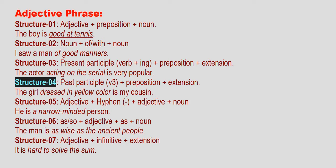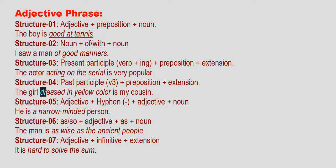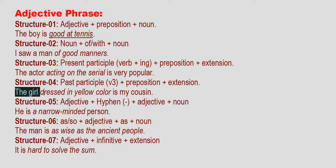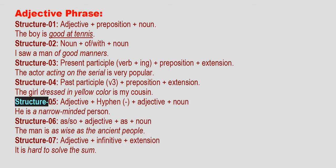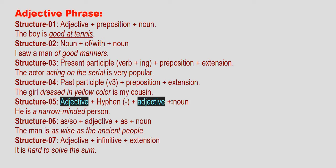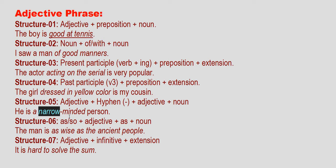Structure 4: from the past participle, the preposition and extension. For example: 'The girl is dressed in yellow color.' Look at the girl — 'in yellow color' is underlined. Obviously, 'in yellow color' is an adjective clause modifying the noun. Structure 5: adjective, then hyphen, then right adjective, and then noun. For example: 'He is a narrow-minded person.' 'Narrow-minded' uses a hyphen, making it an adjective phrase.